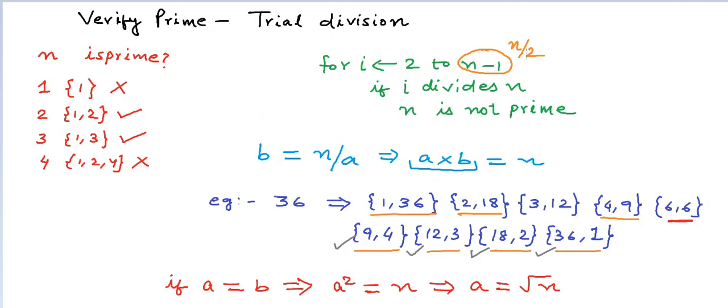So all I need to do is check only till square root of n. So in my actual program, I do not need to run the loop till n by 2. We can run the loop till square root of n and that should be enough. Running the loop till square root of n is a lot more computationally efficient and you can pick up some values of n and try to see that square root of n is a lot lesser than n by 2 for higher values of n.